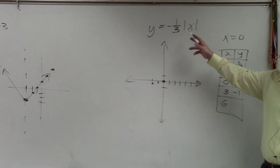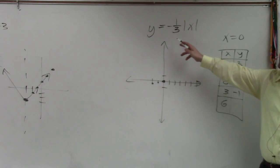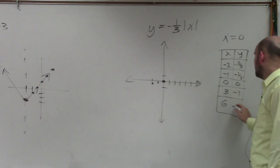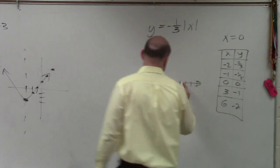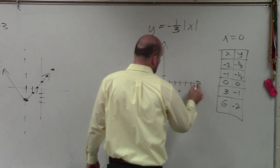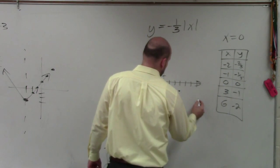6. Absolute value of 6 is 6. 6 times negative 1 third is negative 2. So I go over negative 3, go down to 1. Go over negative 6, go down to 2.